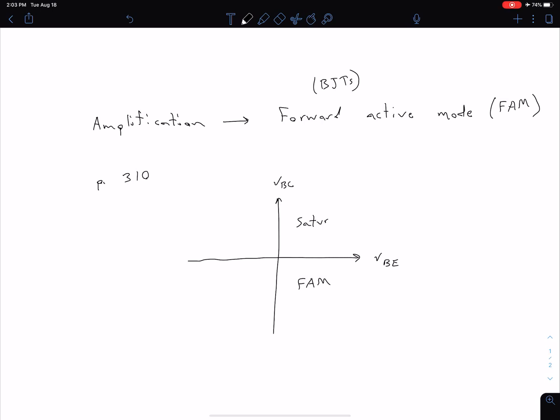If both are forward biased, we have saturation. If both are reverse biased, we have cutoff. And if BC is forward biased and BE is reverse biased, we have the inverse active mode. For most applications we're looking at amplifying, so we want to be in this forward active region, which means that our VBE we want to be greater than zero, and our VBC we want to be less than or equal to zero - negative so that junction is reverse biased.